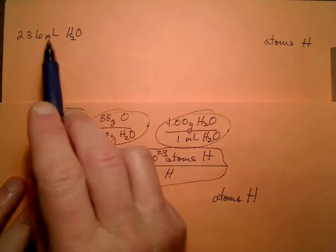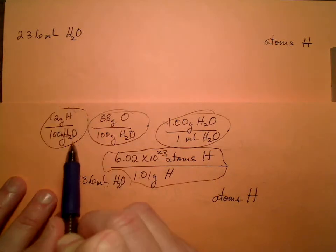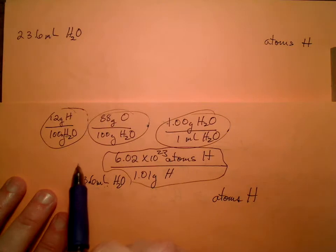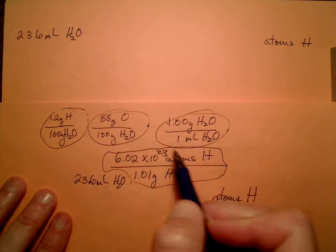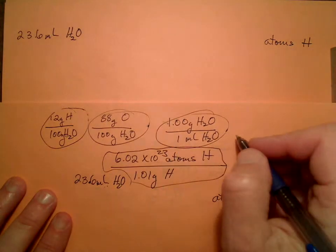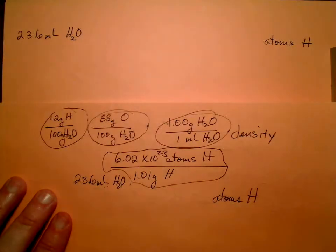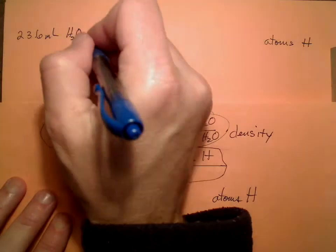Now, the only problem is that's milliliters, that's grams. So how can we go from milliliters of water to grams of water? Our density. Any time we need to go between mass and volume, density is it. So I'm going to go ahead and use that.